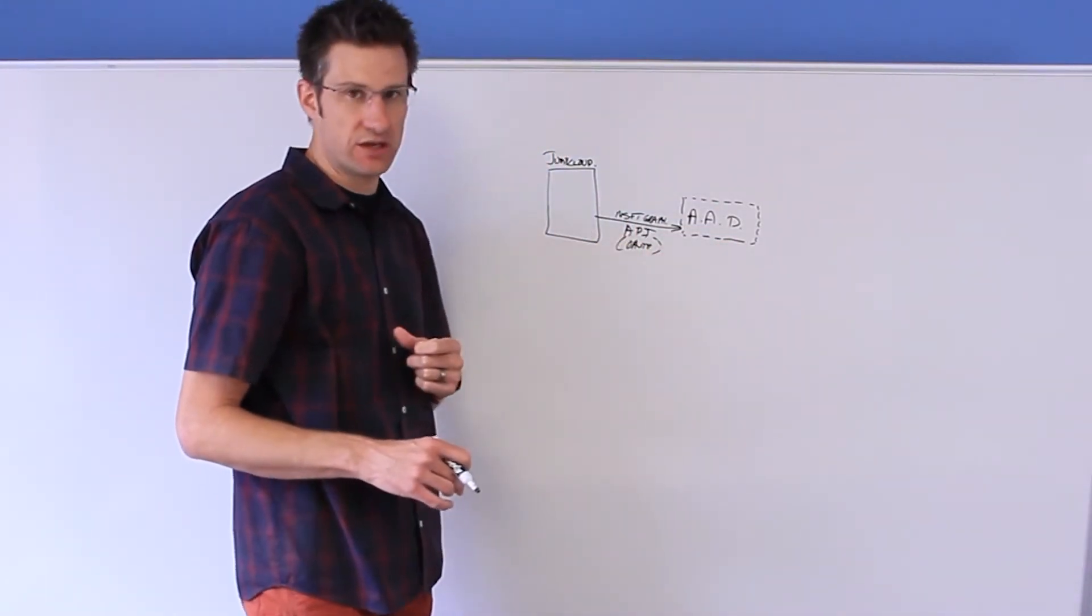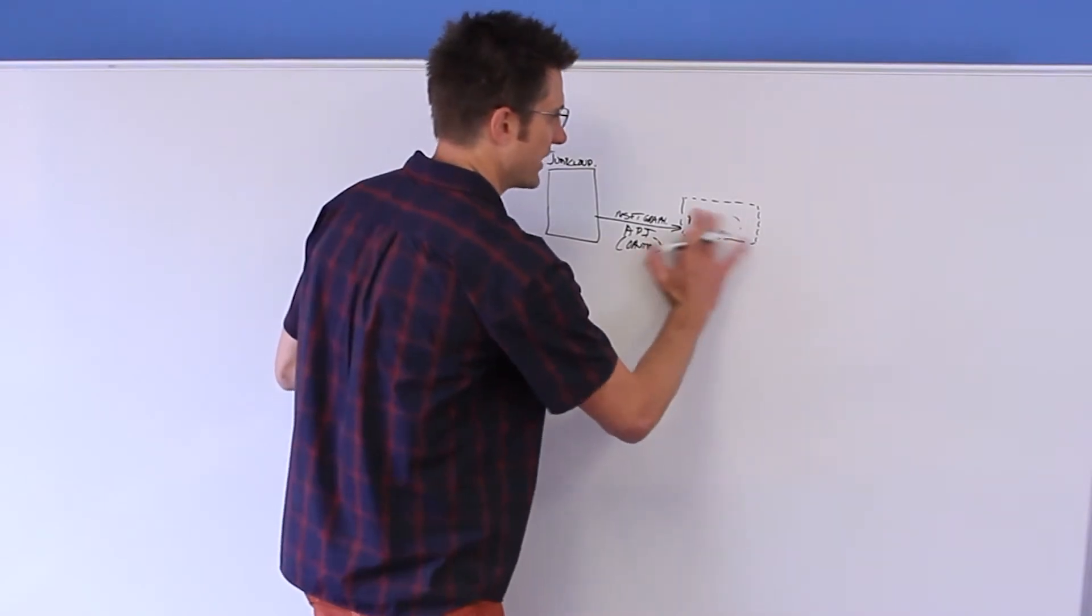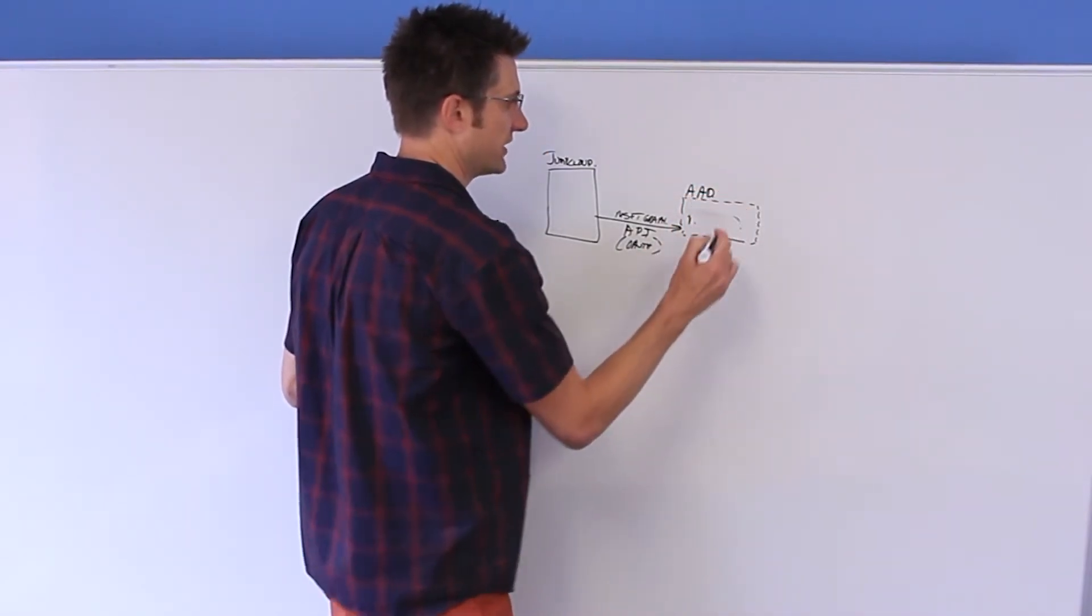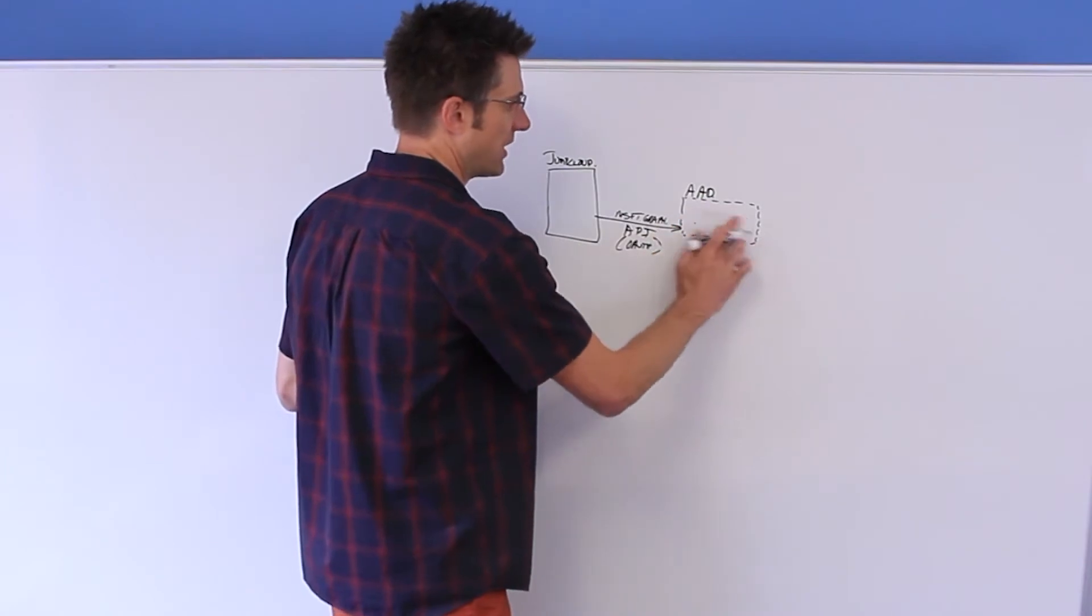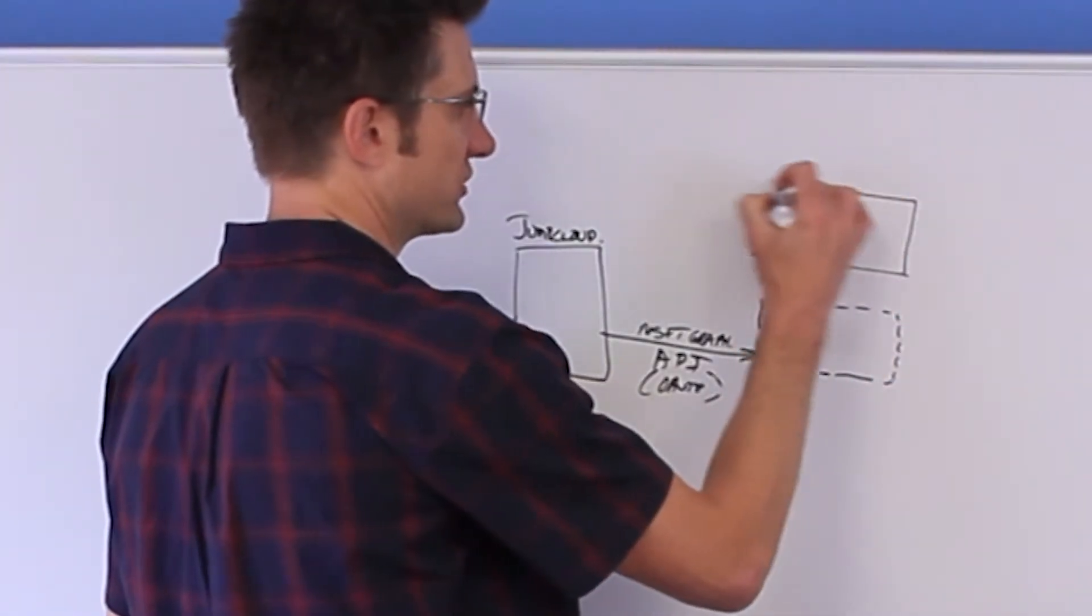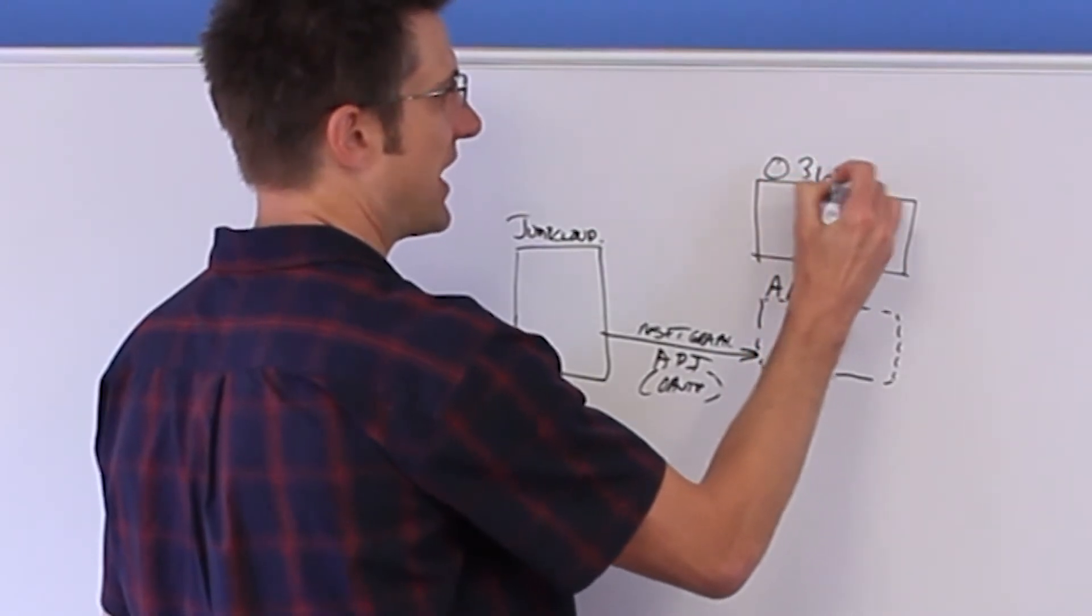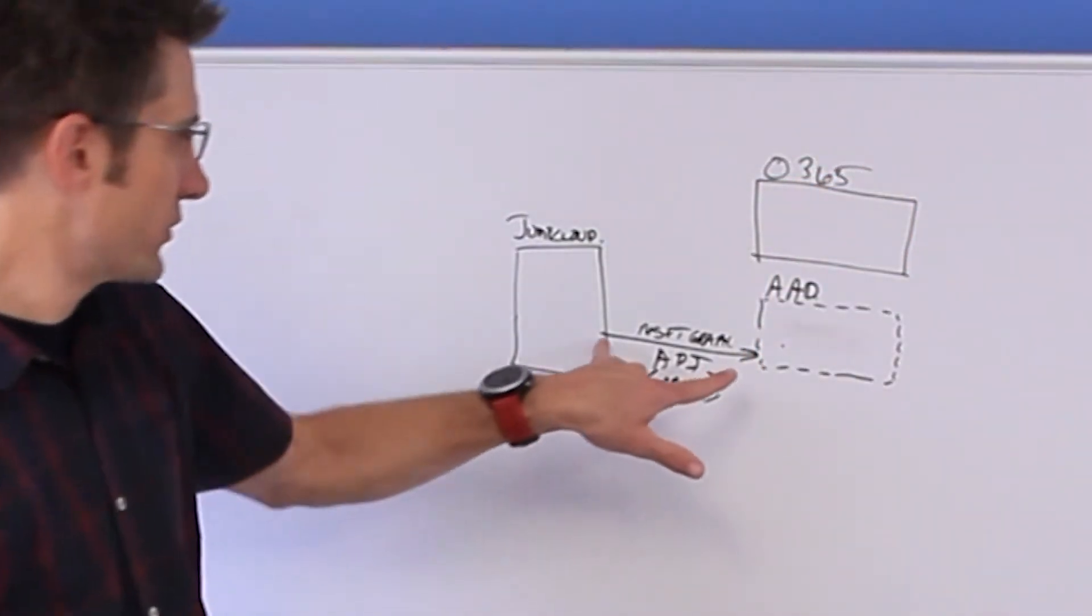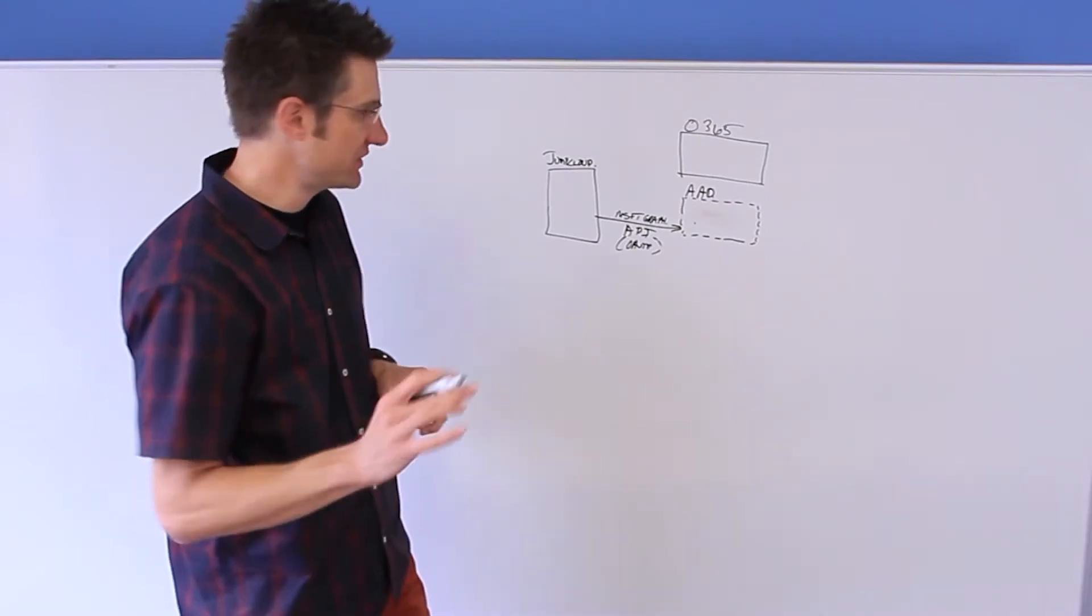So with this understood, good. So you have, actually let me write AAD up here. You have Azure Active Directory as their sort of directory service layer. And then of course, one of the service endpoints is Office 365. So the relationship that we maintain is as follows.